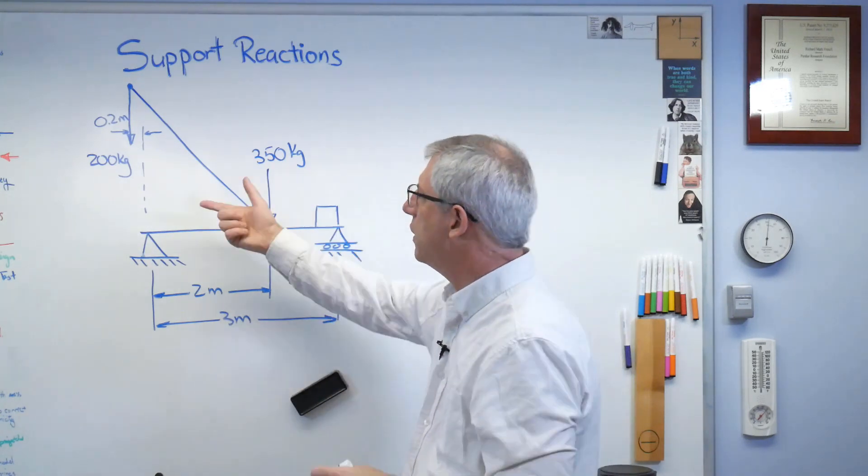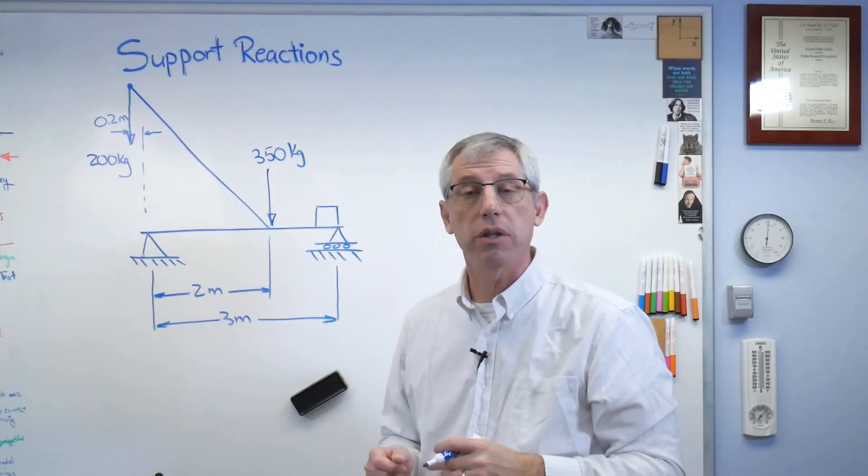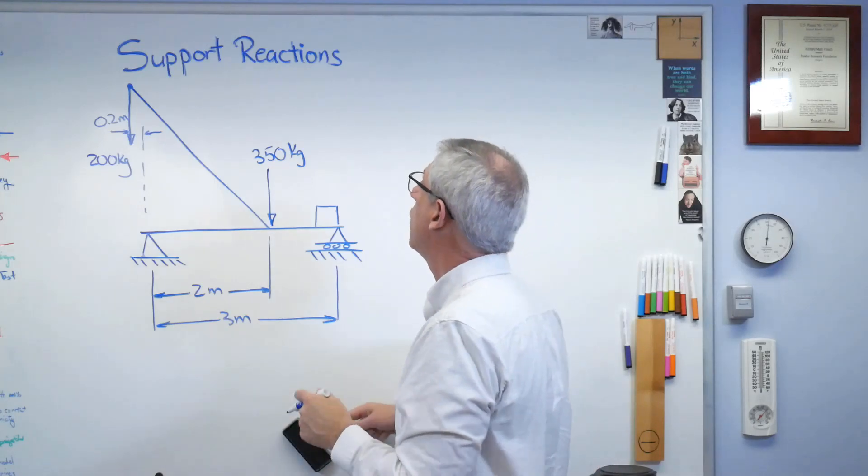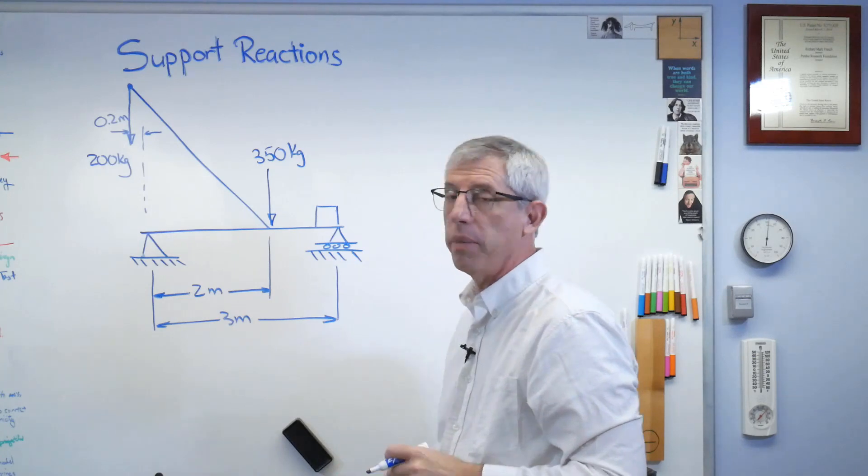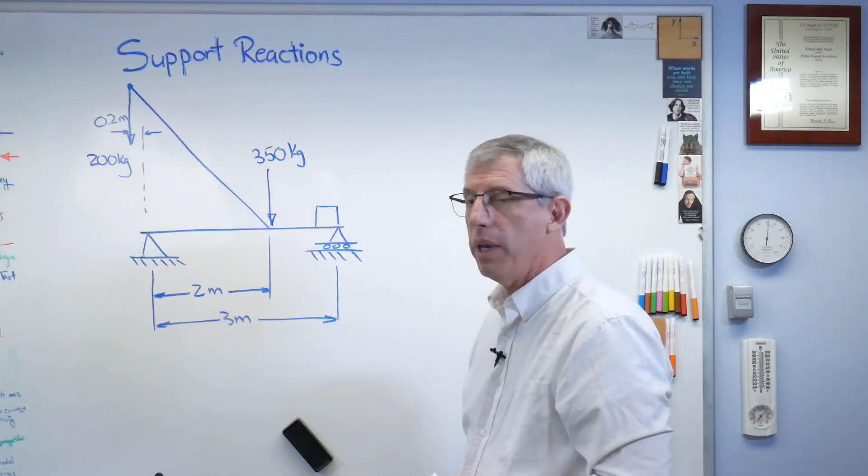This is an example problem. So if these numbers are a little off, it doesn't change the process that we're going to go through. So we have that, and I'm going to have the center of gravity pretty much where the crane boom attaches. So here's everything we need to know.